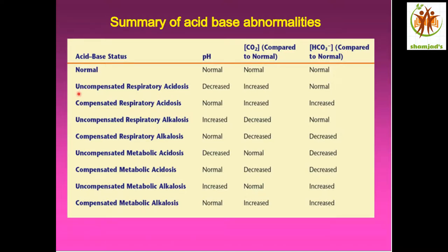Uncompensated respiratory acidosis: the pH is decreased because of the acidosis, CO2 is increased (respiratory), and the bicarbonate is normal — the kidney has not compensated and the bicarbonate still remains normal. The body did not compensate, and as a result the pH is still decreased. That is respiratory acidosis.